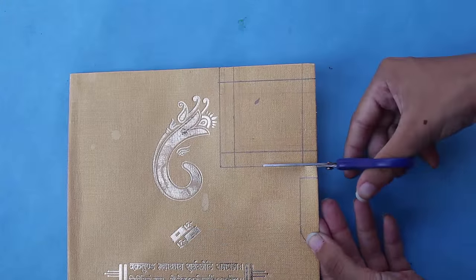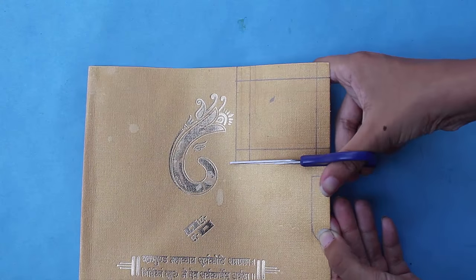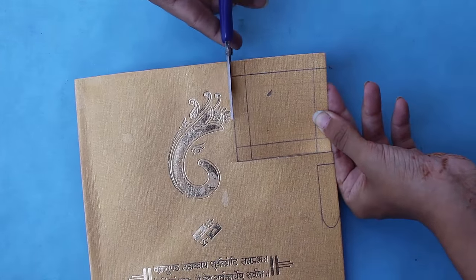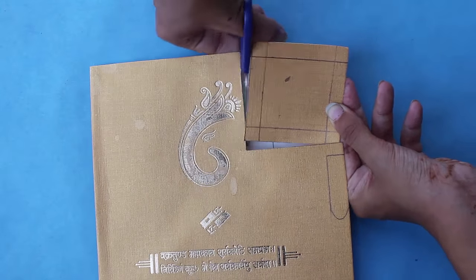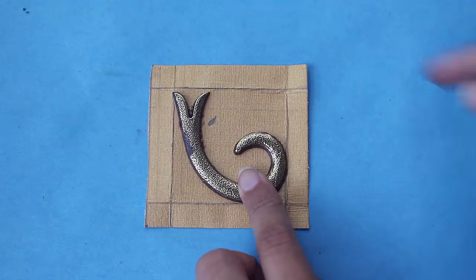You have to first start cutting a square of side 8 centimeters. You have to draw a border on this square of about 1.5 centimeters and fold it as shown.